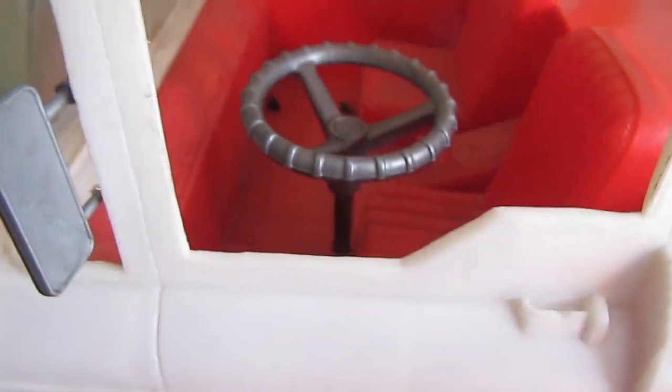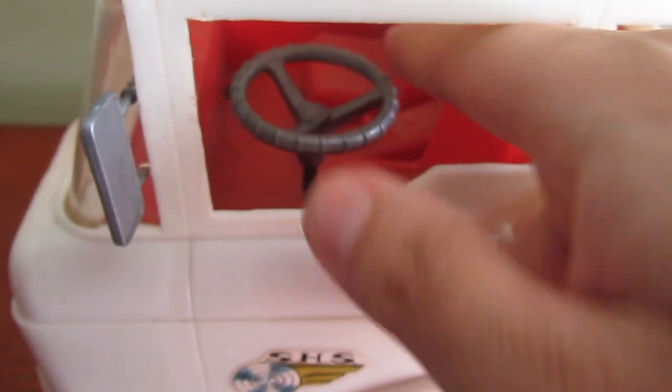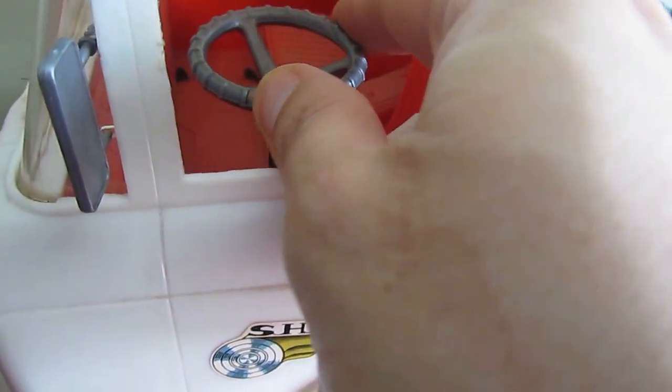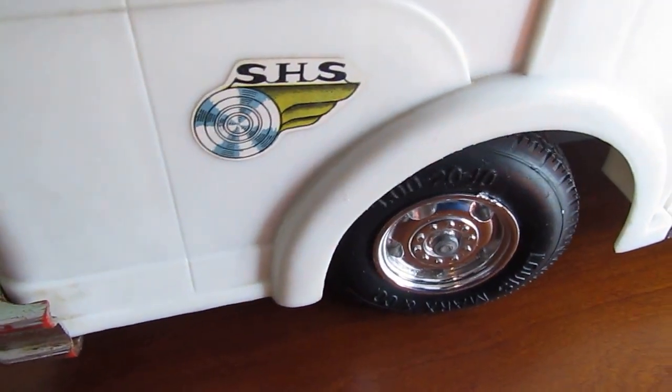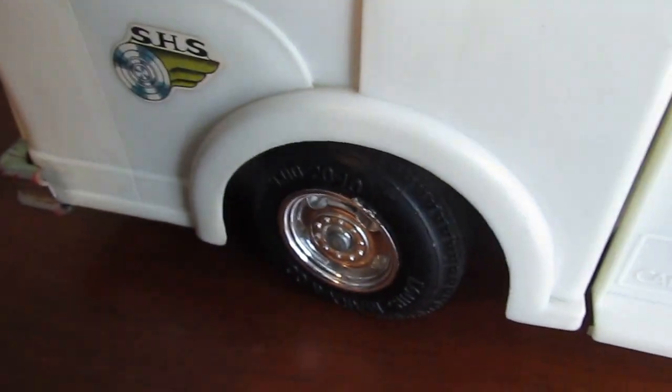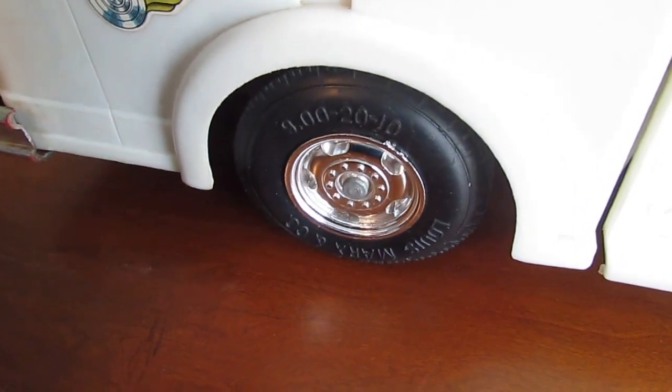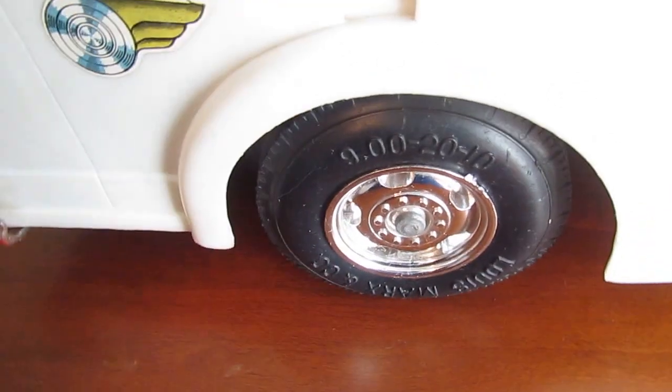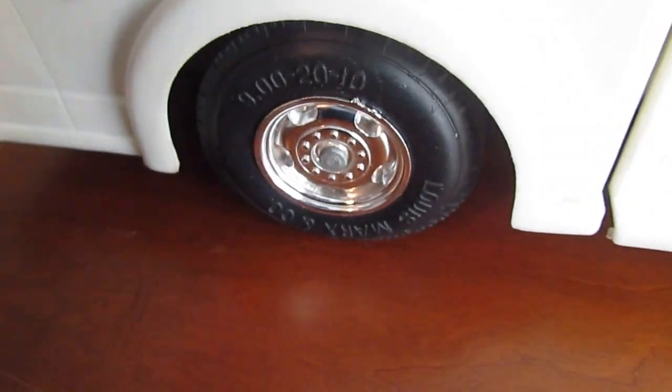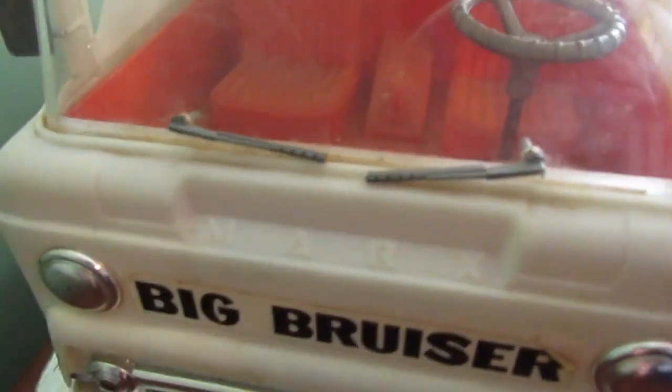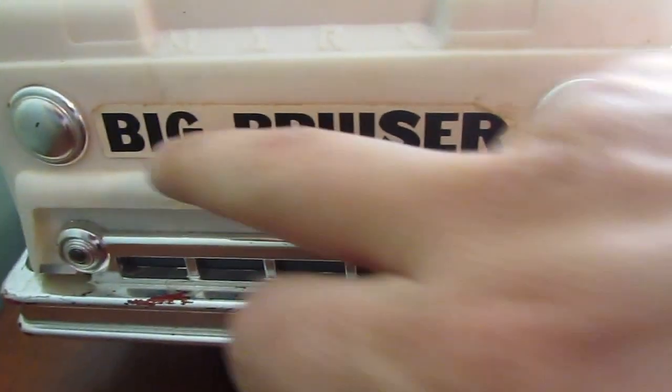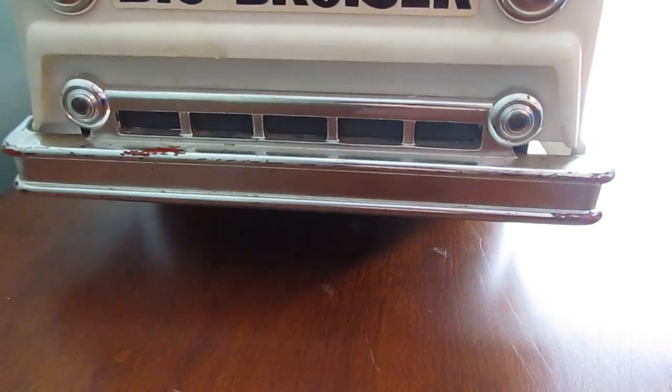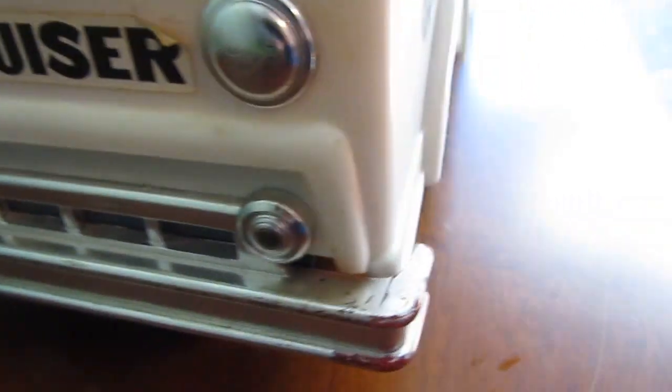So the steering wheel actually moves the front axle. It pivots and as you can see it moves the front wheel. It also has the windshield wipers there, they are still attached, still moving. The Big Bruiser decal right in front. Nice fender, little chrome missing, otherwise real nice. Whoever had this toy previously definitely took care of it.